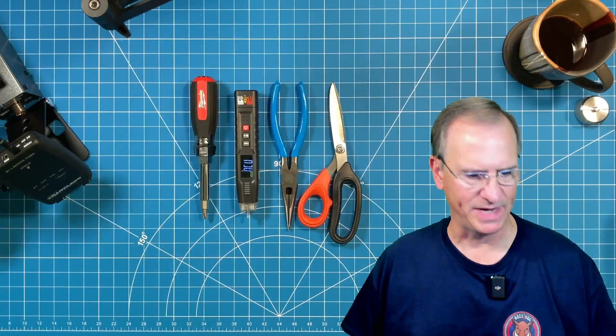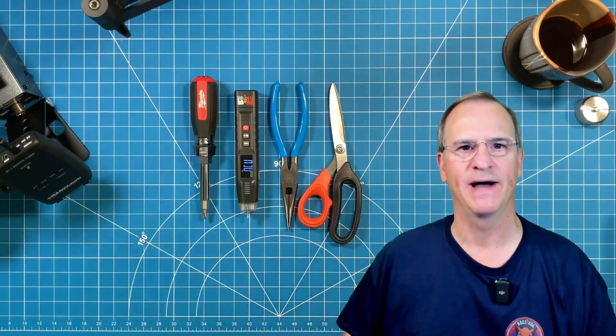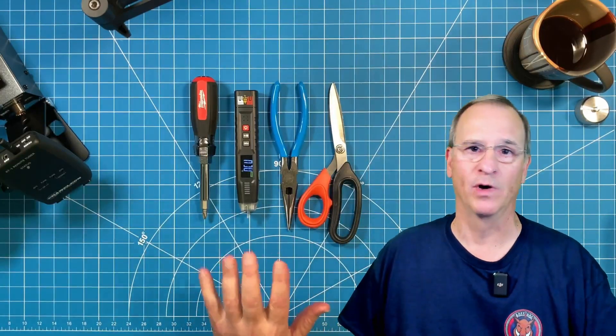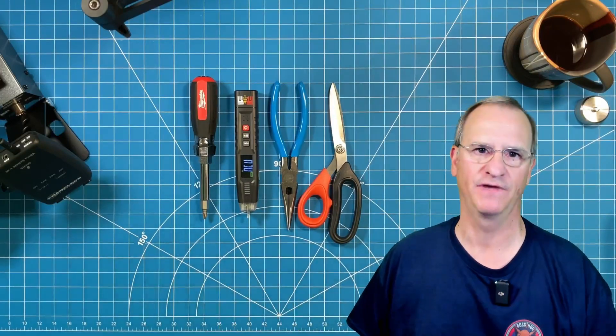Actually, as multimeters go, it's pretty diminutive in size. Compare it to common tools that you might have in your shack, and it's one of the smallest multimeters out there on the market today, and that's one of the greatest features about it.